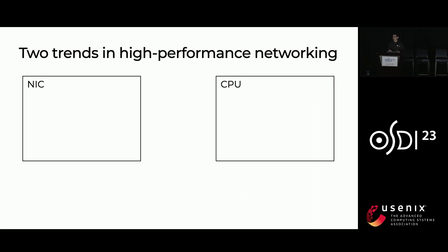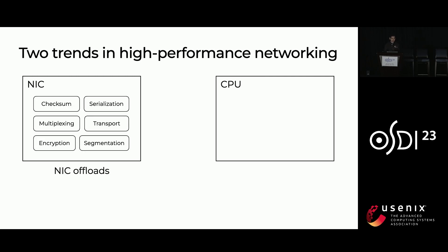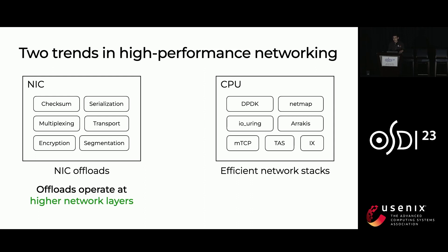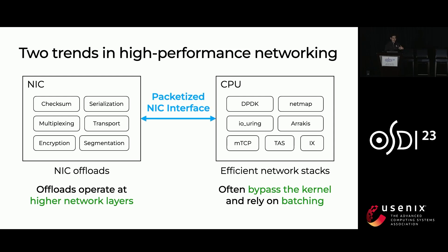If you've been keeping up with this session, as well as the latest proposals for improving host networking performance, you'll probably notice two main trends. On the NIC side, we've seen increasingly more complex offloads that increasingly operate at higher network layers. On the CPU side, we've seen the rise of efficient network stacks that often use techniques such as kernel bypass and rely on batching to reduce per-packet overheads. But while there's been tremendous improvement on both fronts, one piece of this picture has been really similar over the past 30 years, which is the way the NIC and the CPU communicate.